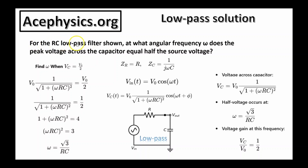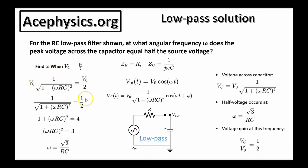The question asks: for the RC low-pass filter shown, at what angular frequency omega does the peak voltage across the capacitor equal half of the source voltage? The impedance of the capacitor is a function of omega, the driving frequency. We know the voltage across the capacitor from the previous slides, and if we set it equal to half the amplitude of the source voltage, we can solve for omega. Dividing both sides by V_0 and then squaring and cross-multiplying gives us the equation to solve.